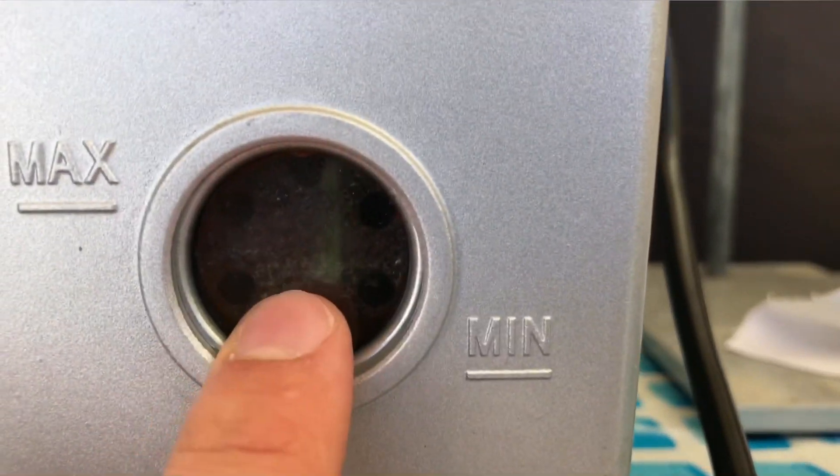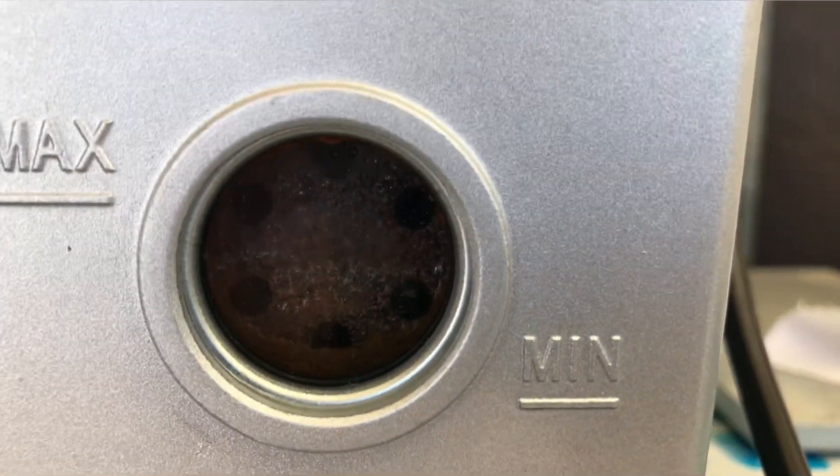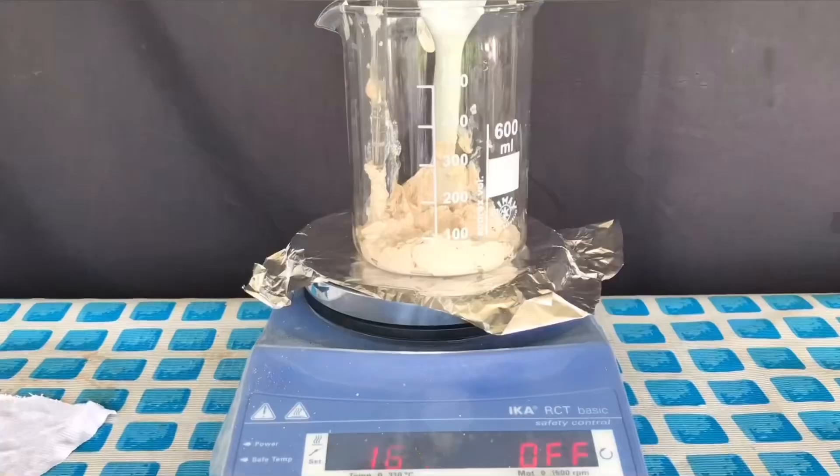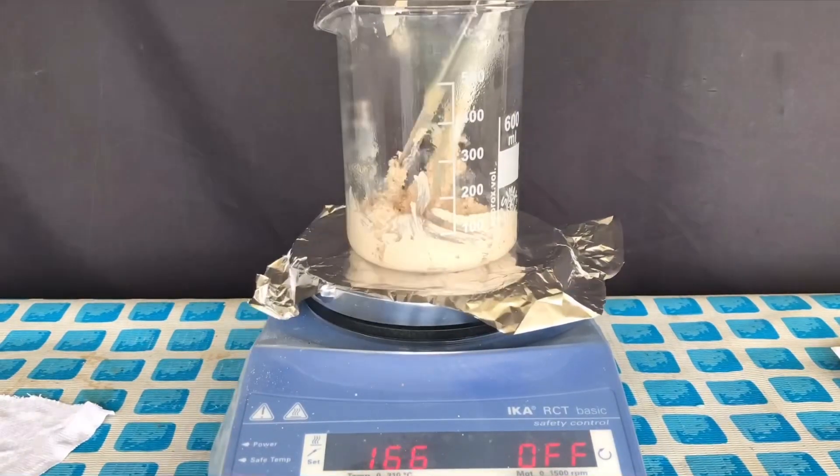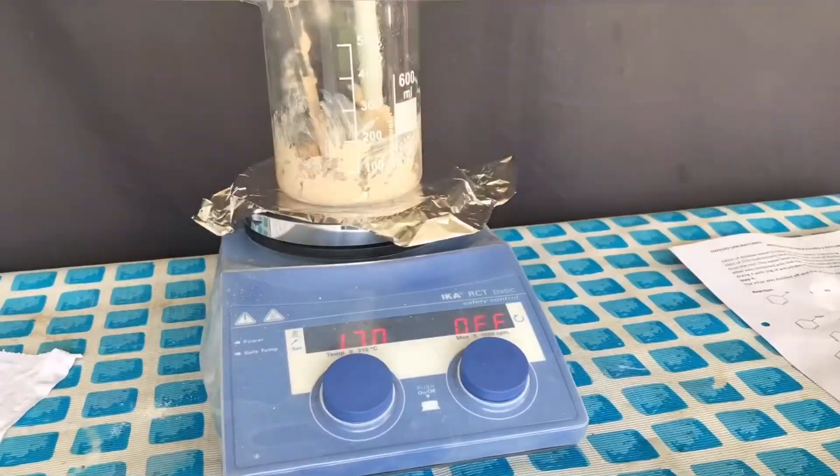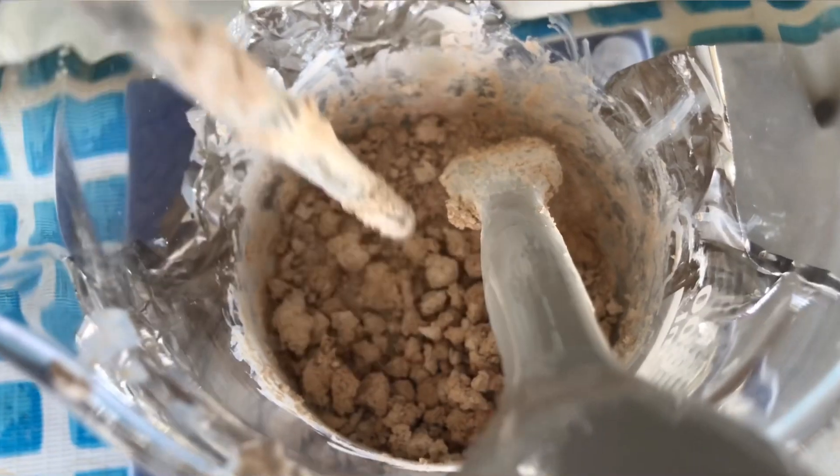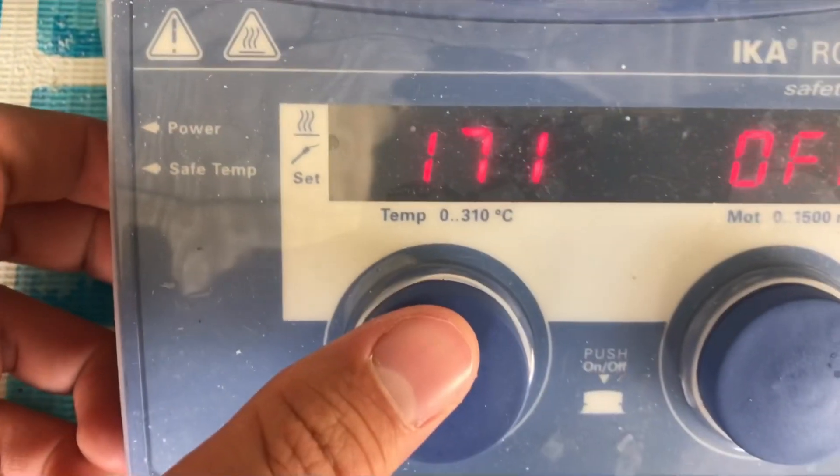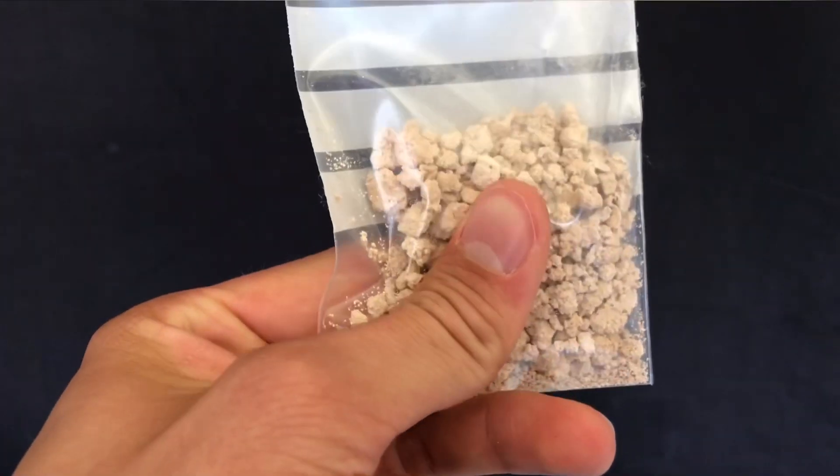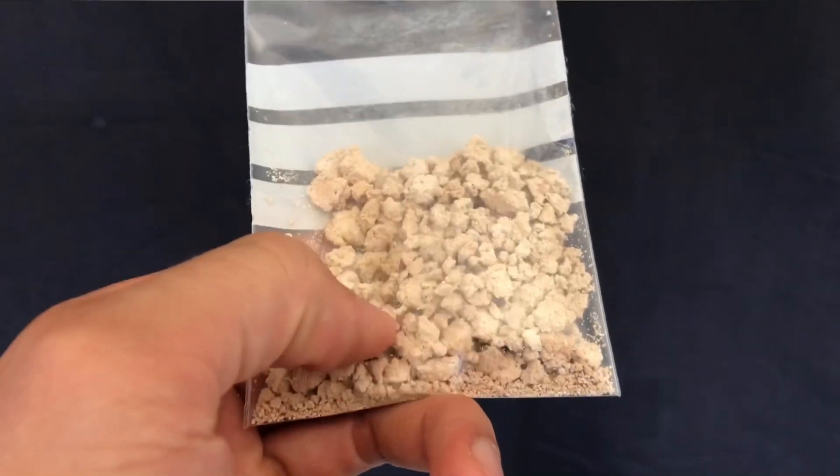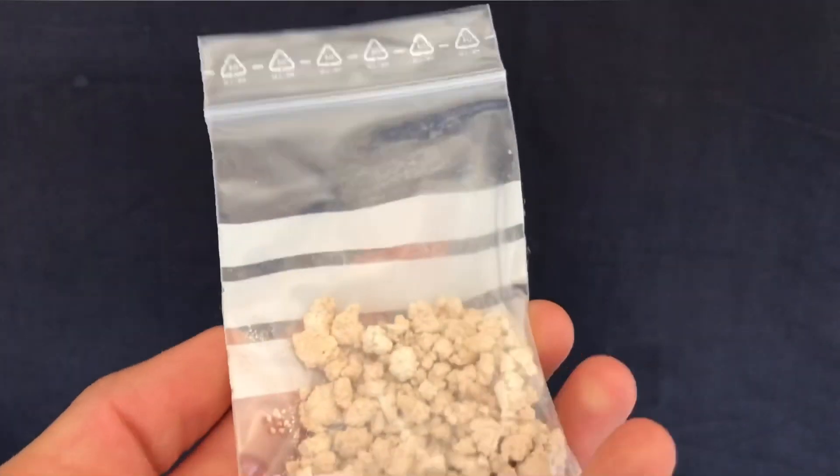I also used the opportunity to change out the oil because it looked bad. The product was dried on a hot plate at 170 degrees Celsius until it was completely dry. Once it wasn't nearly dry, the hot plate was turned off.